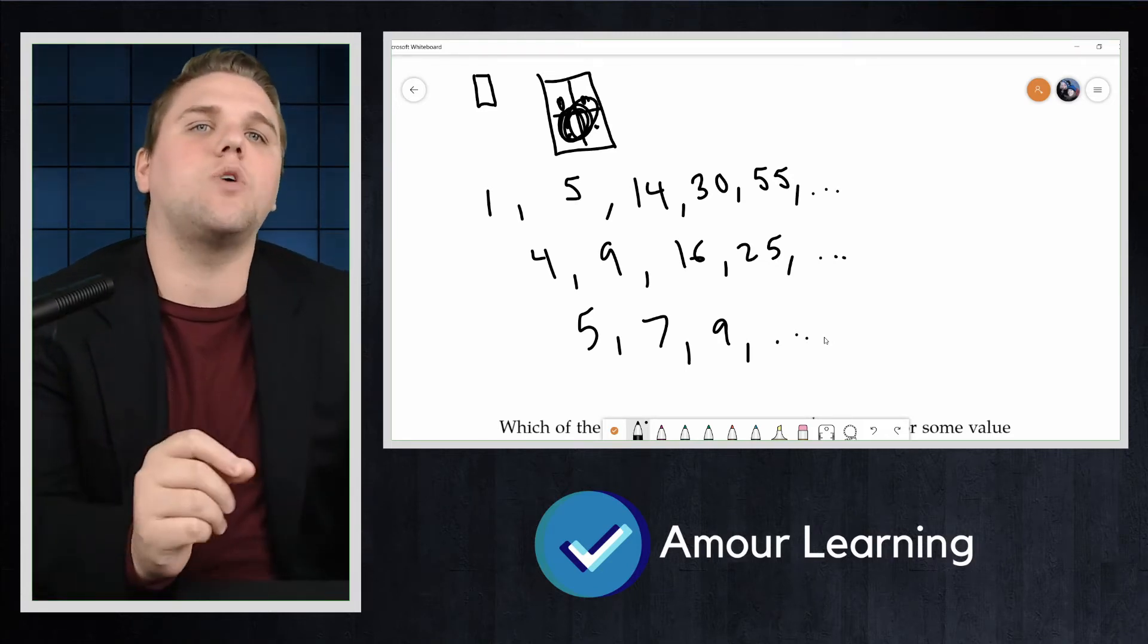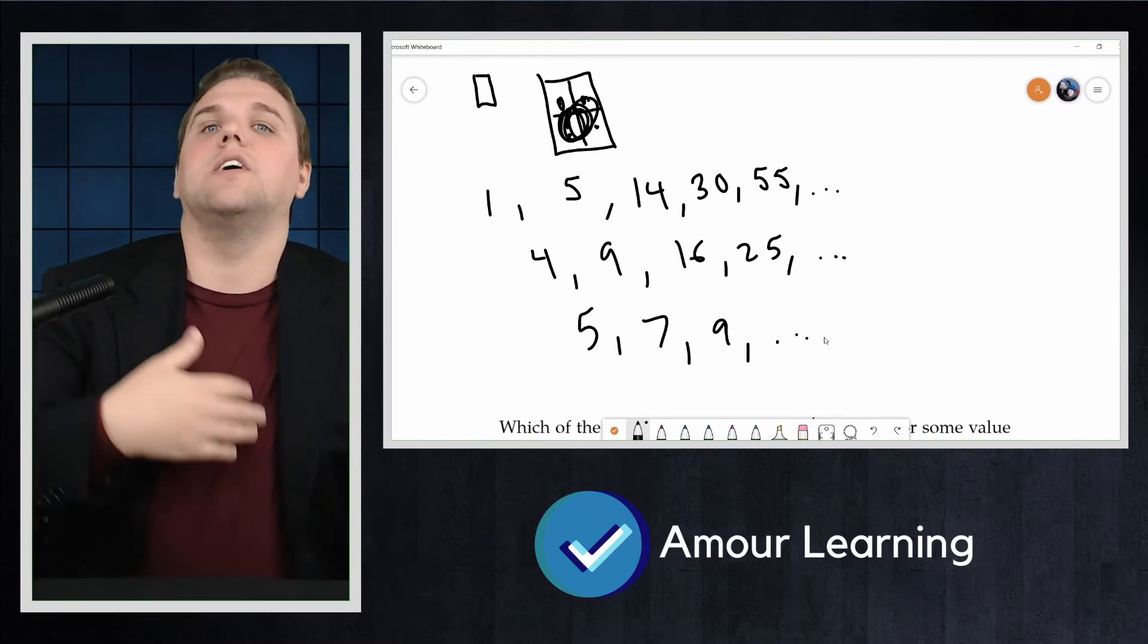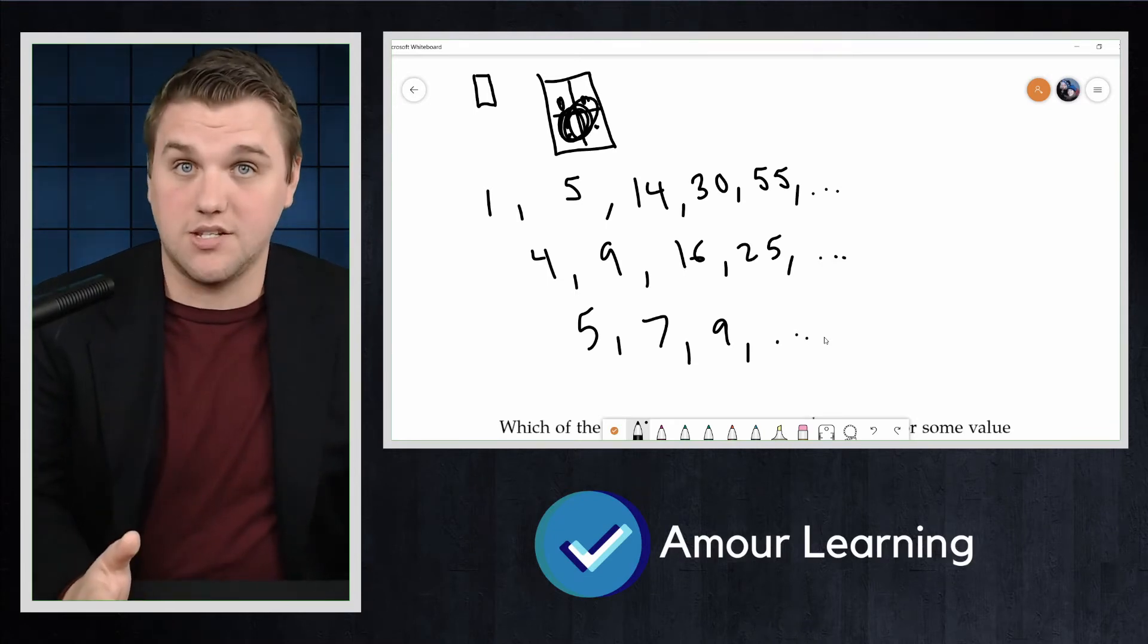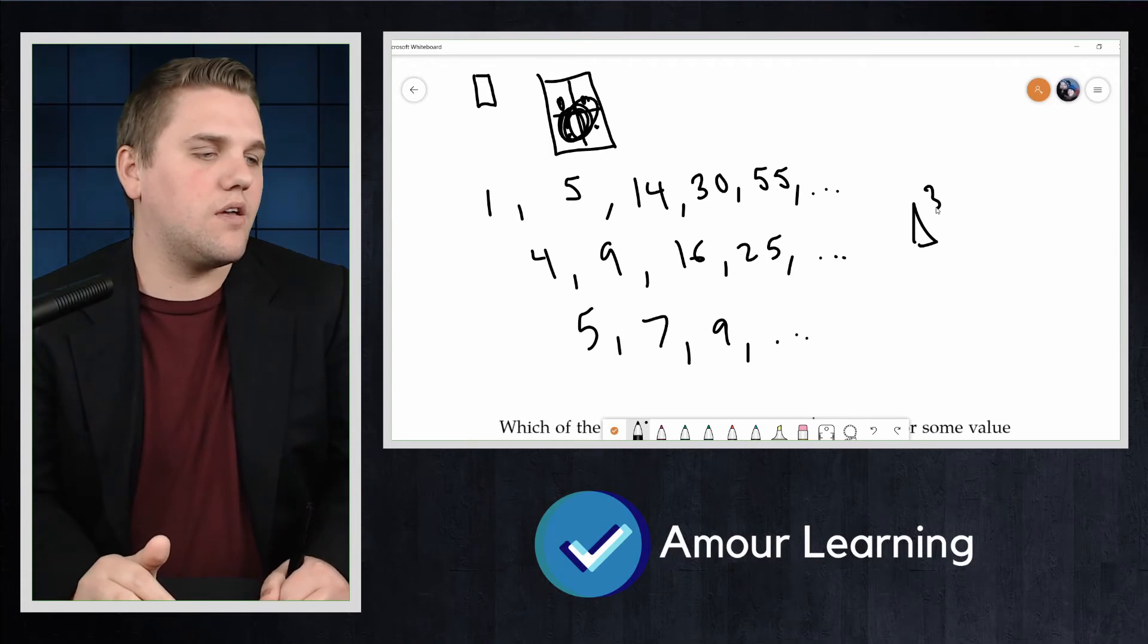Notice that our original sequence had third differences constant. That is, differences of differences of differences of the original constant. We will call such a sequence delta 3 constant.